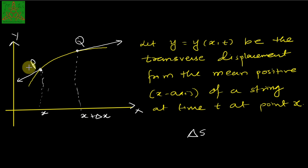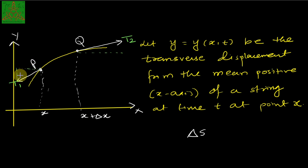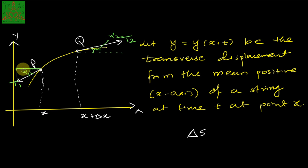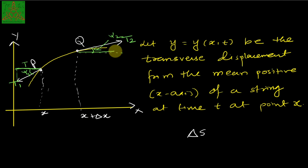Now, let us consider the tensions T1 and T2 at points P and Q respectively, with angles ξ1 and ξ2. We will assume that in the x-direction there is no displacement. So the tension component in the x-direction is the same constant value T at both ends.